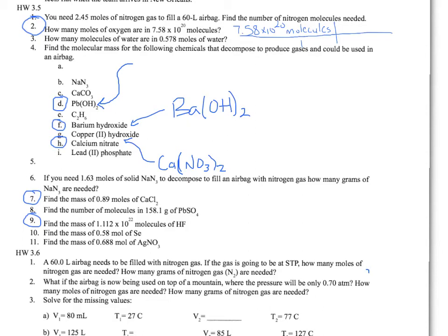This is the homework help video for homework 3.5 for chemistry. I'm going to work through numbers 2, 4C, E, and G for you, and then number 6 and number 8. I'll leave the last one for you — I think you can handle it. These are the questions that I think will help you the most, and they're also questions that we haven't done in class.